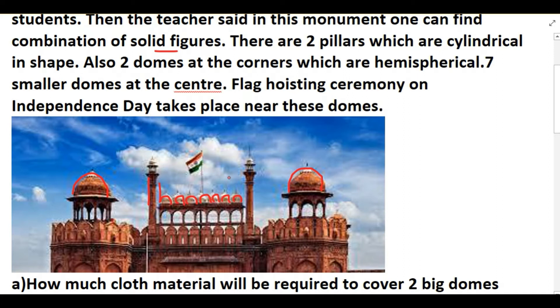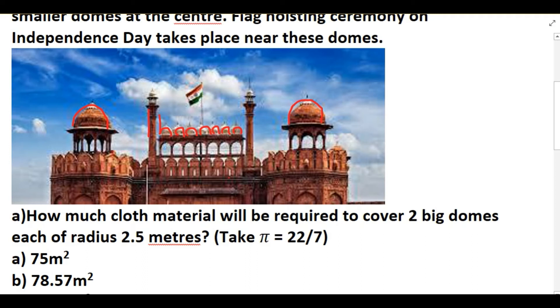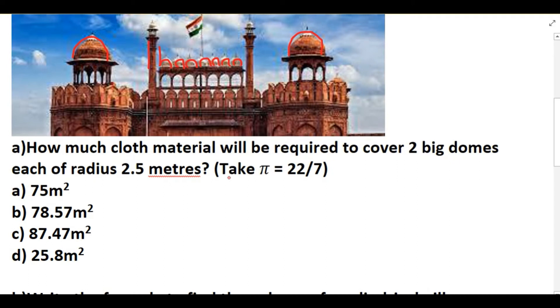Now the first question is: How much cloth material will be required to cover two big domes each of radius 2.5 meters? So we need to find, the domes are in the shape of hemisphere, so we need to find how much cloth material will be required to cover two big domes of each of radius 2.5 meters. Need to find CSA of two hemispheres.